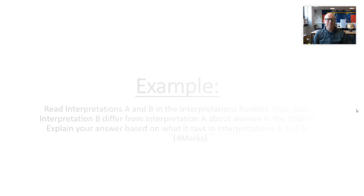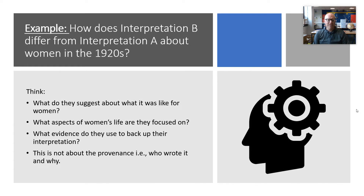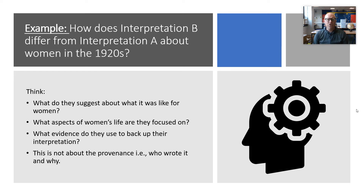So how do we approach this? First, we read both interpretations — possibly easier to take one at a time. We ask: what does it suggest about what it was like for women? What aspects of women's life are they focused on? What evidence do they use — the words they use to back up their interpretation? We must remember the 'how' question is not about who wrote it and why. It is not about the provenance. We are looking at the content of the interpretation.